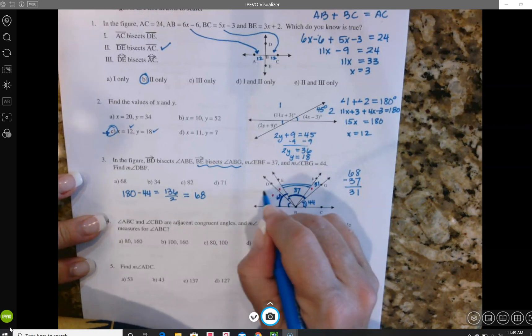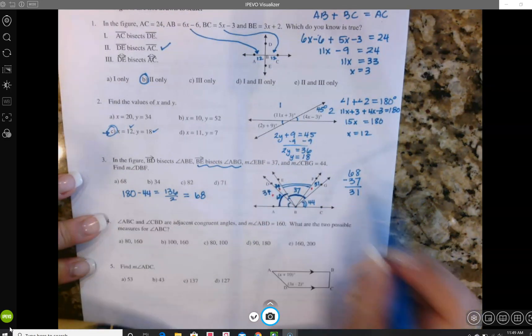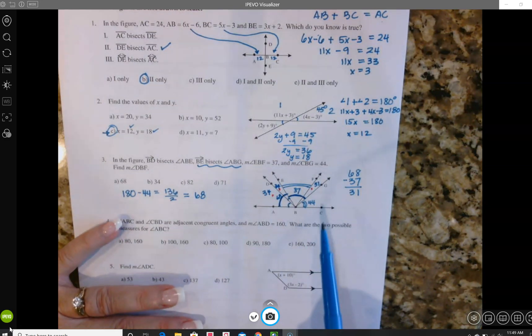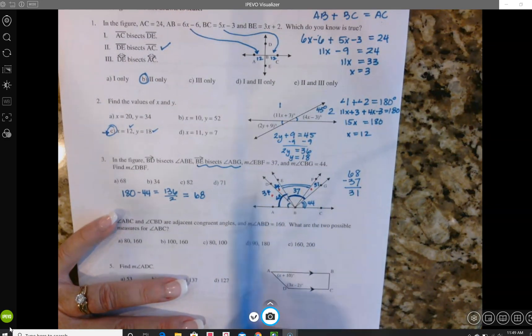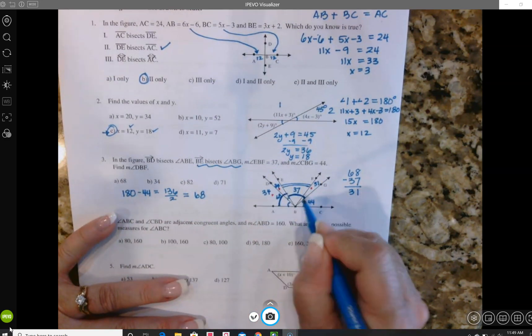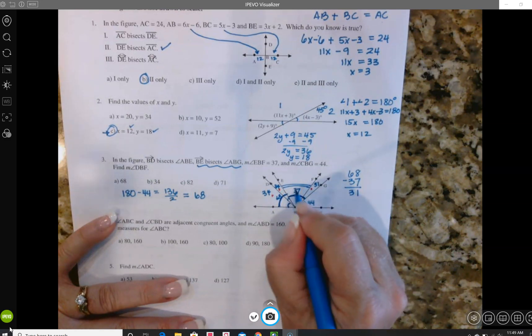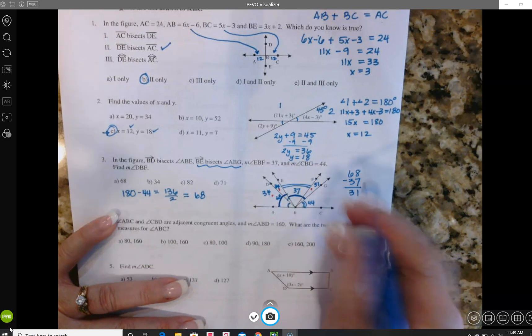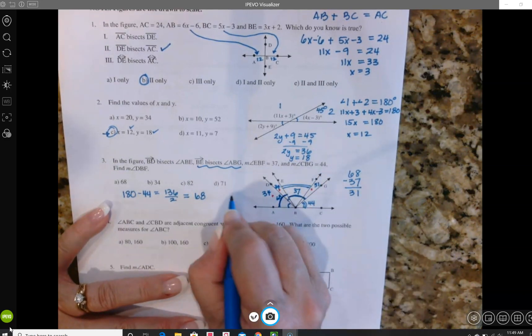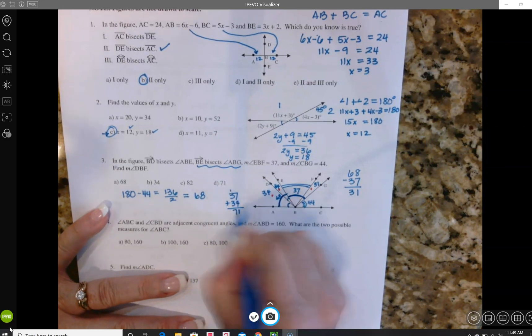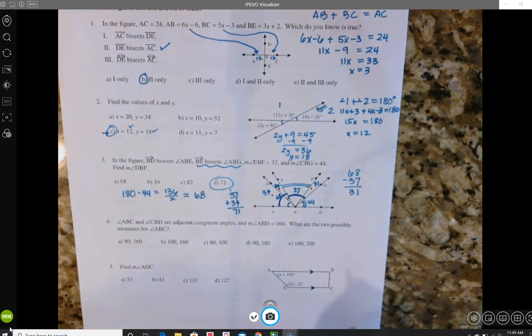So now all of my angles in the picture are labeled and what I'm looking for is DBF. So DBF is going to be made out of this 37 plus 34, so if I take 37 plus 34 all together that's going to equal 71, which is choice D.